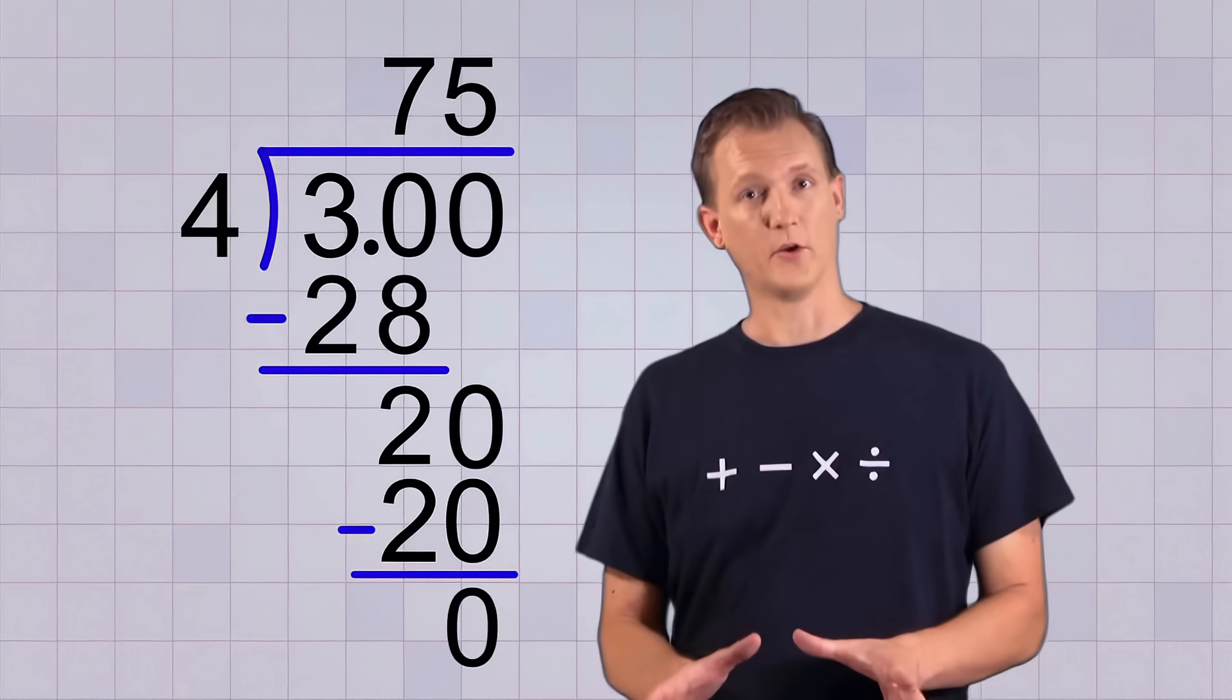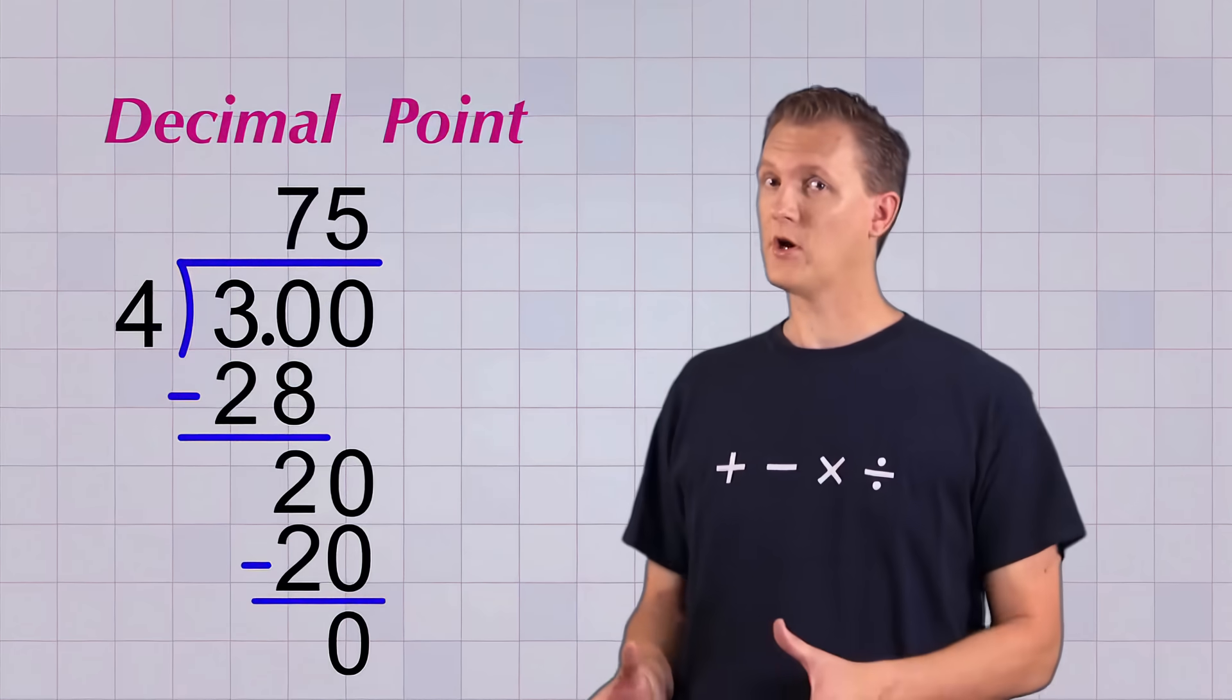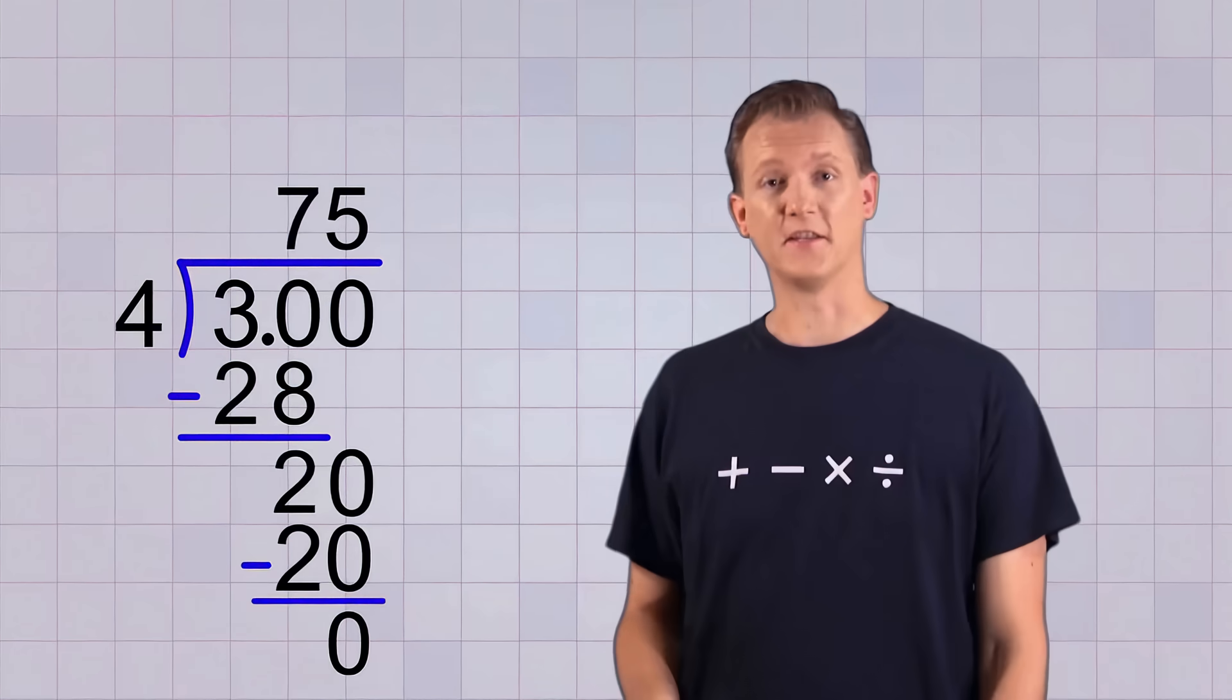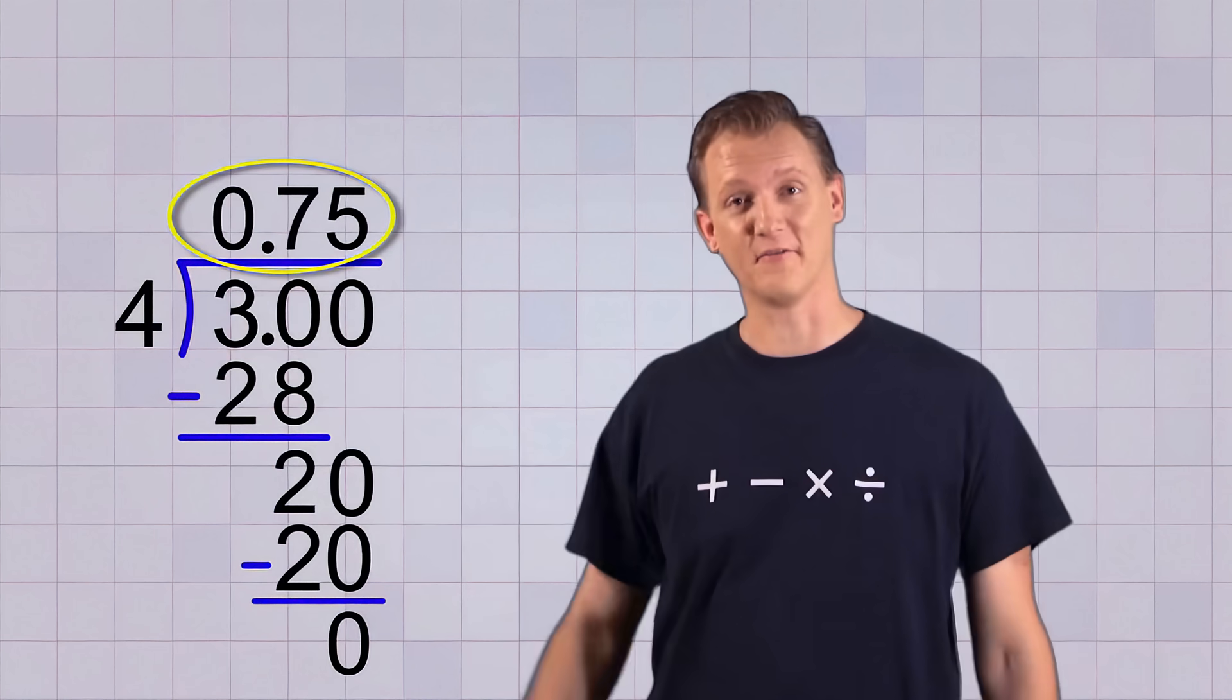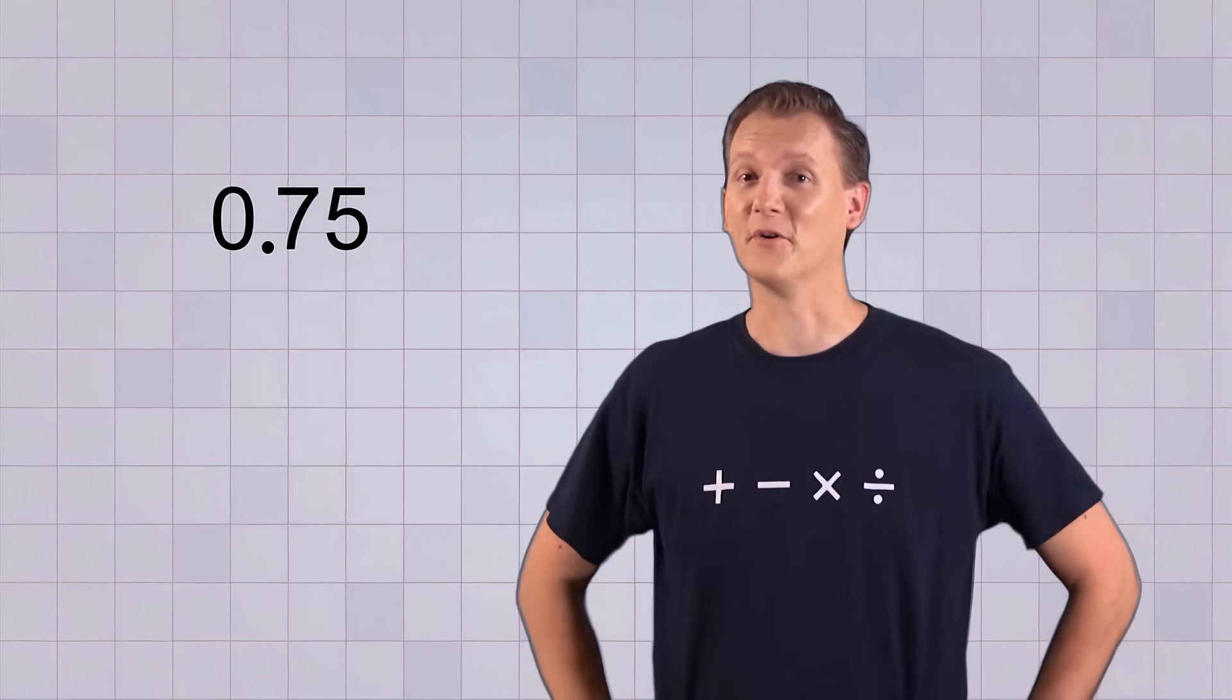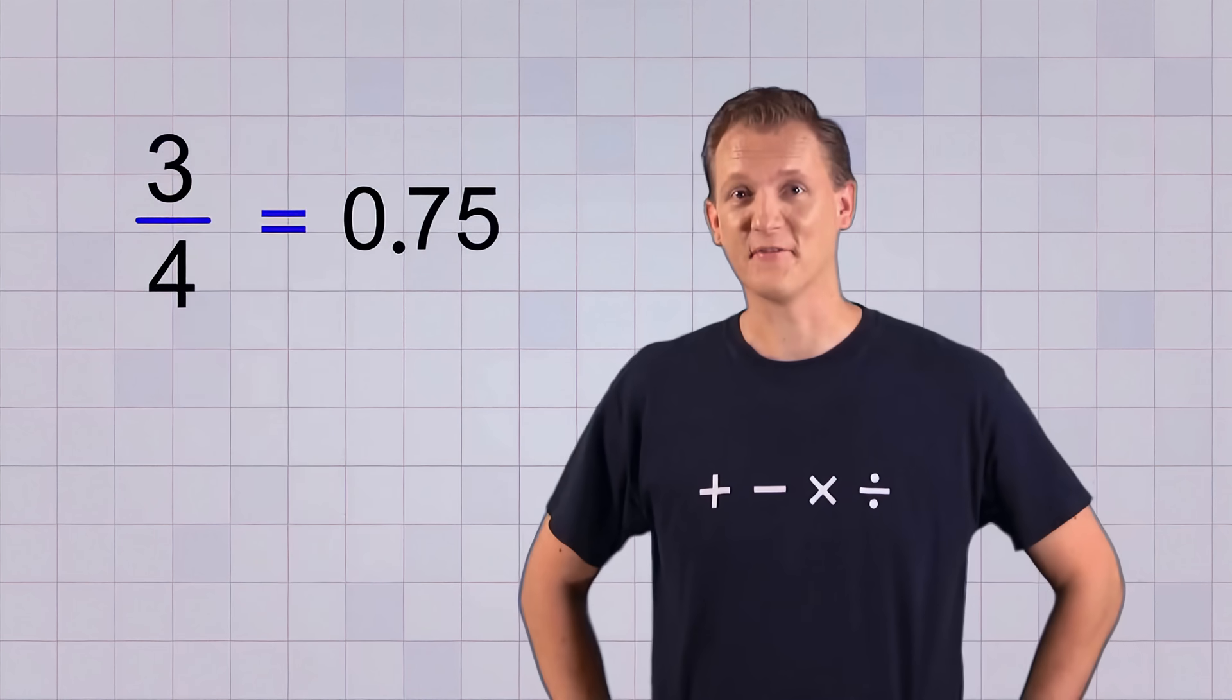But don't forget, we need to include the decimal point in our answer. Now if you've kept your columns lined up like I have, you'll see that the decimal point goes right here. And that makes our answer 0.75. So the decimal value of 3 fourths is 0.75.